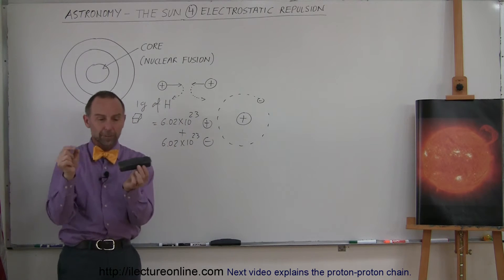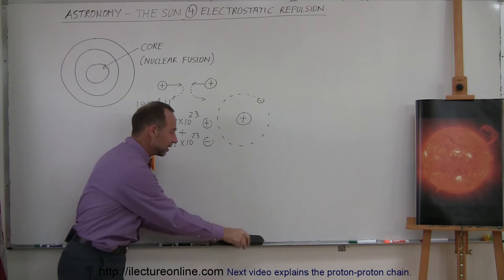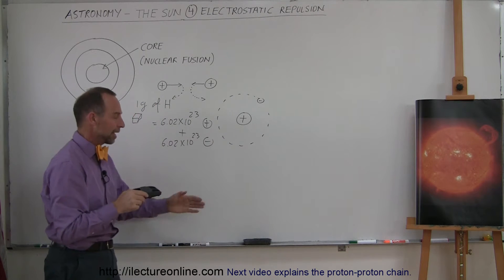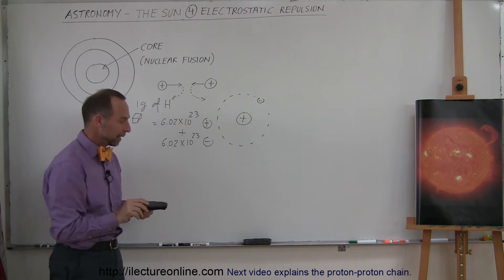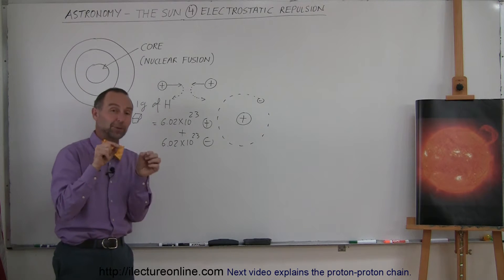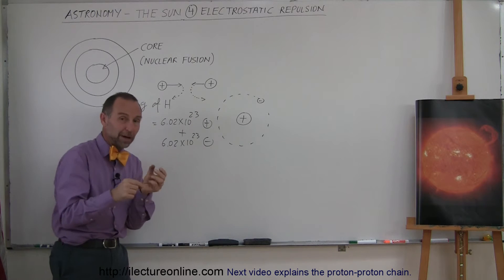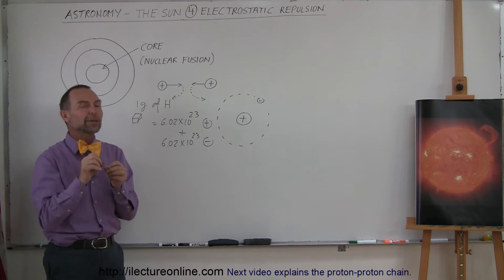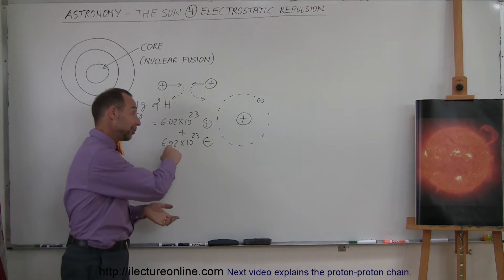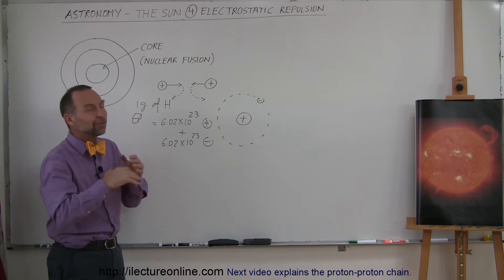So you open up the lid, you put in a proton, close the lid real fast. Then you take the electron, open up the lid, put the electron in, close it real fast. So now you have one proton and one electron in there. Let's say you keep doing that for a while. You take one gram of hydrogen, you separate the protons from the electrons, put the proton in one box, put the electrons in the other box. You keep doing that of course, it would take you a very long time to do one gram of hydrogen. Because that's a whole lot of protons and electrons. But let's assume you could do it.